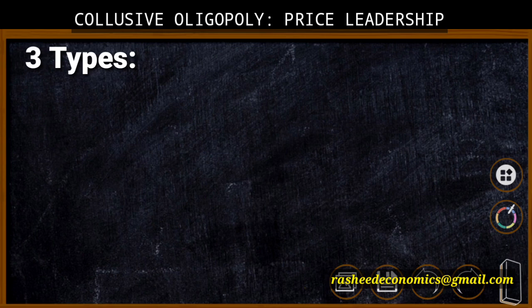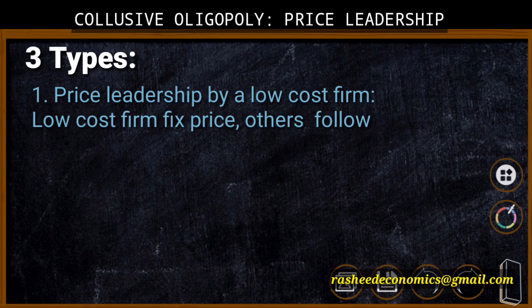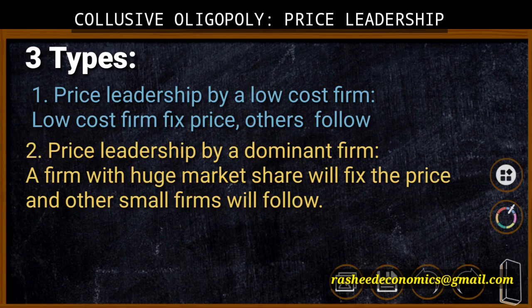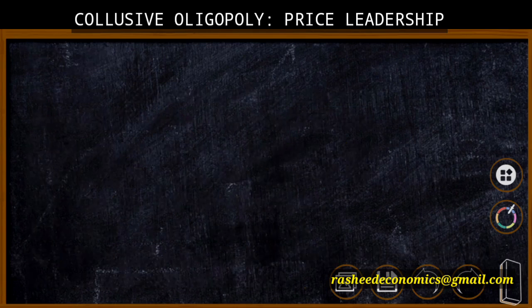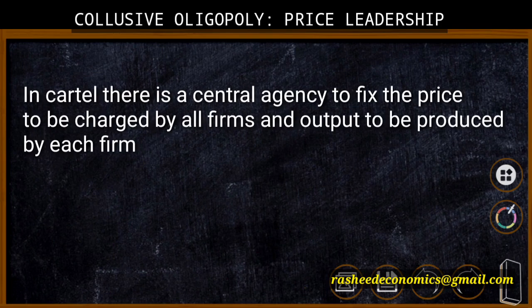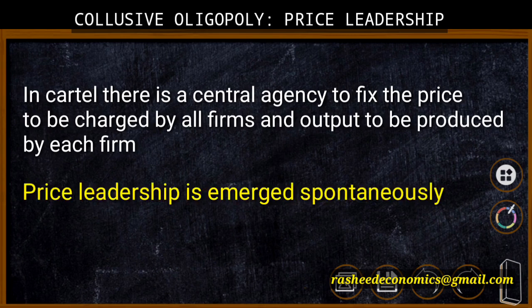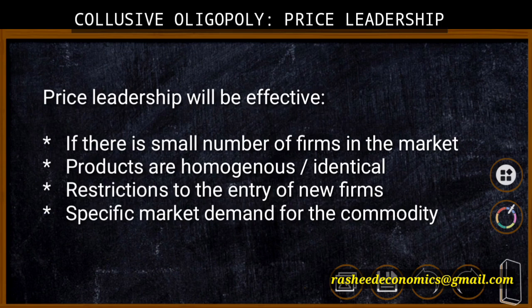Price leadership may be in three forms. The first category is a firm that becomes price leader because of lower cost — this is termed price leadership by a low-cost firm. The second category is price leadership by a dominant firm, where a firm with the maximum market share fixes the price and others follow. The third category is barometric price leadership, where the price leader may be an old or experienced firm. The basic difference between cartel and price leadership is that in cartel there is a central agency to fix price and quantity, but price leadership emerges due to spontaneous actions.